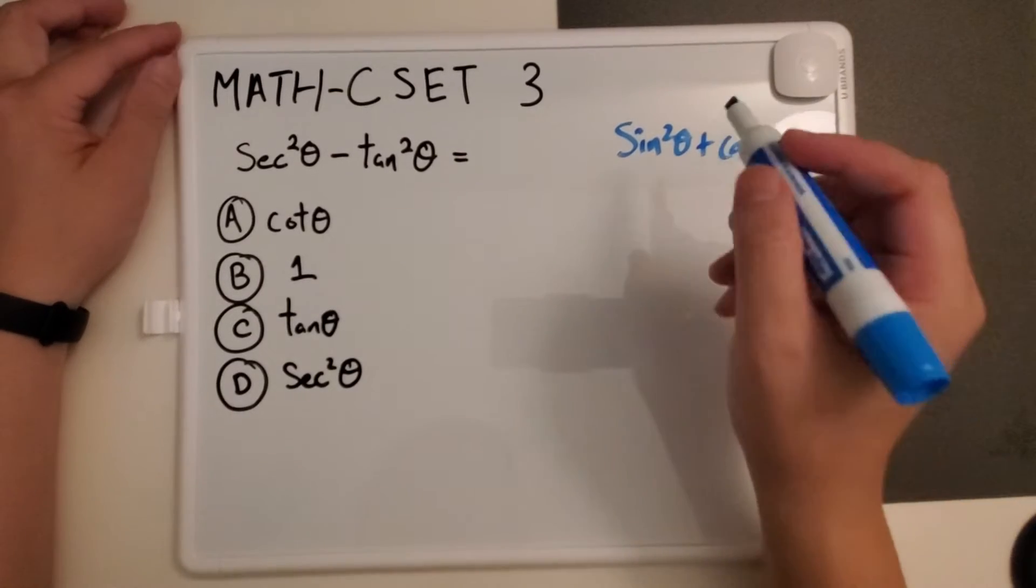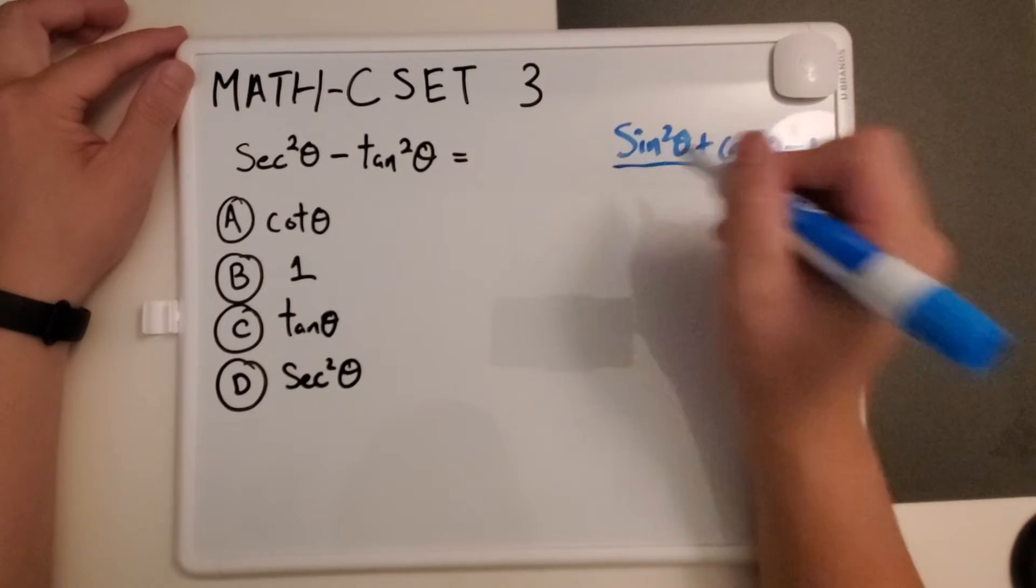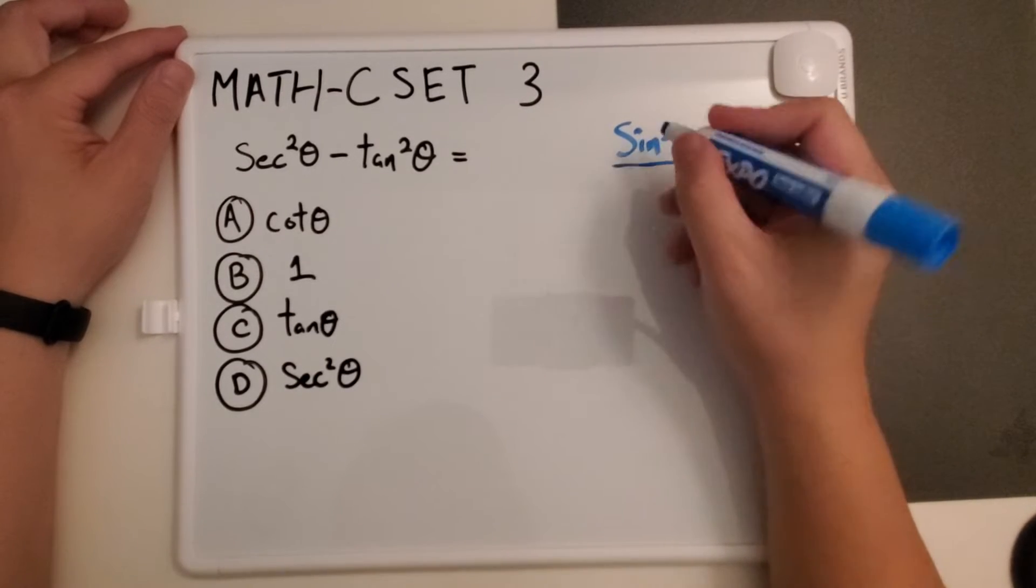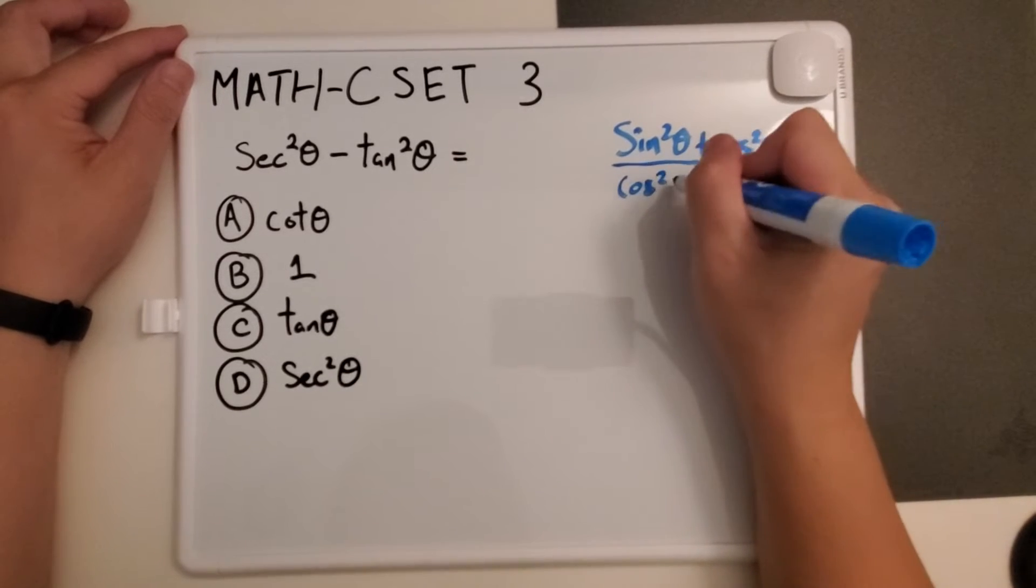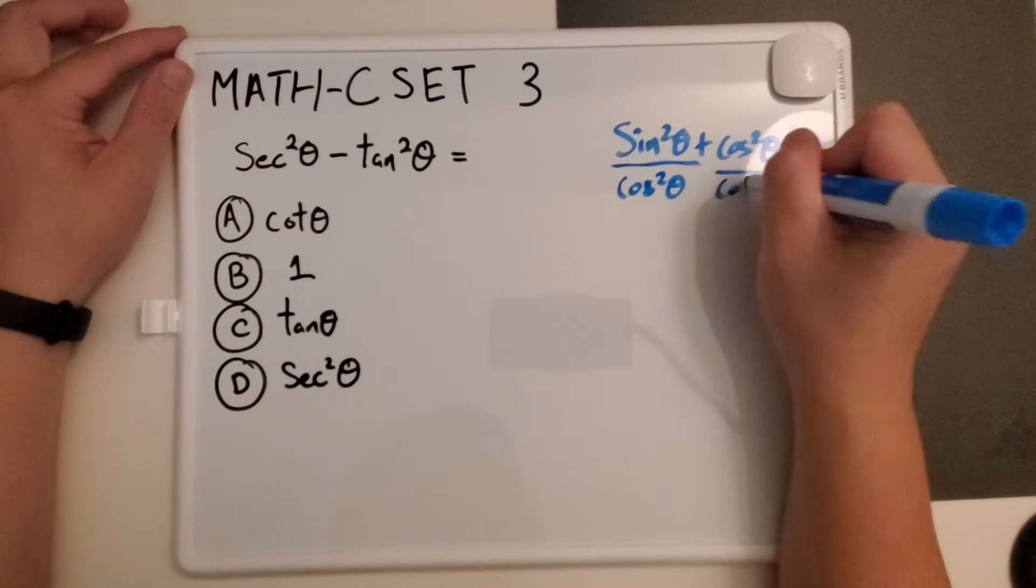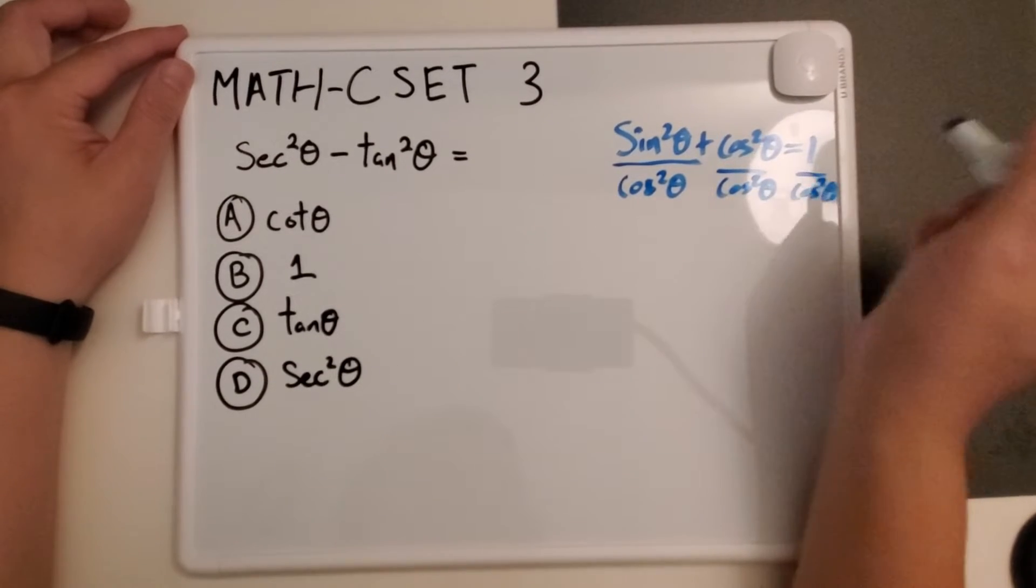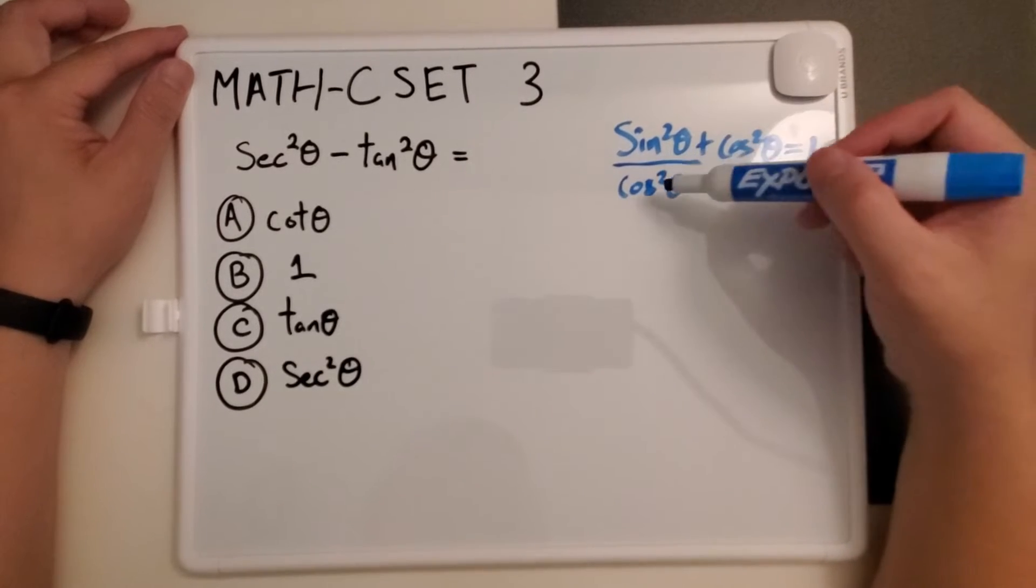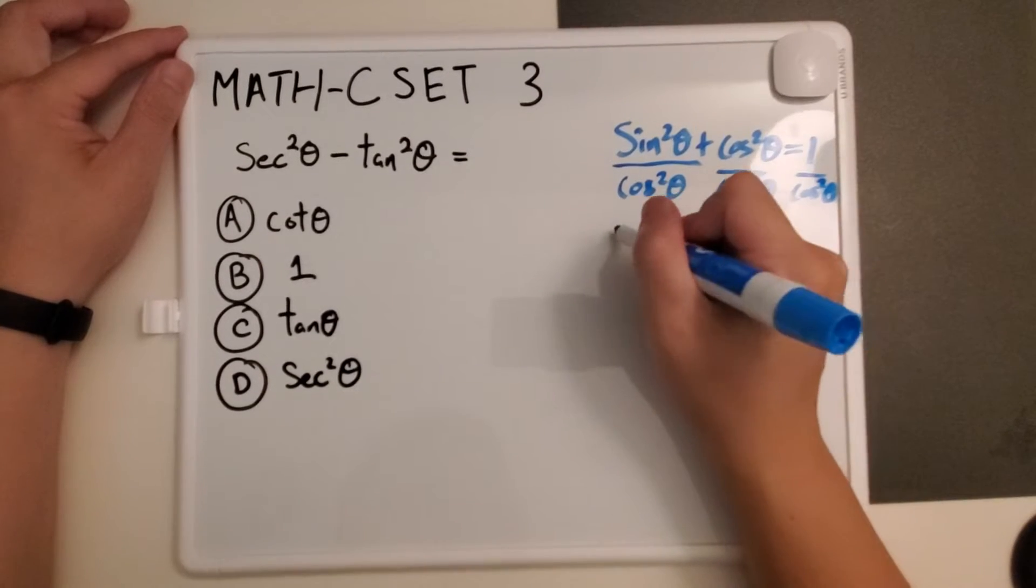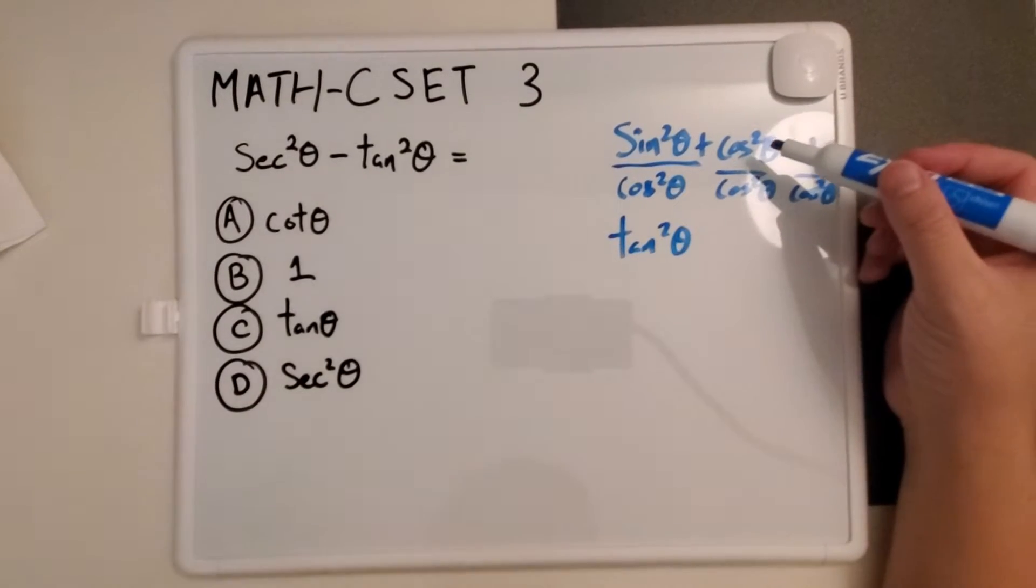If we were to use this one and divide it by a common denominator, we can say okay let's divide everything by cosine squared theta. If we recognize that this is sine squared theta over cosine squared theta, which equals tangent squared theta, and we have cosine squared over cosine squared theta, this just becomes 1.